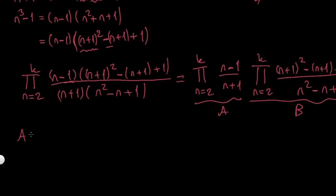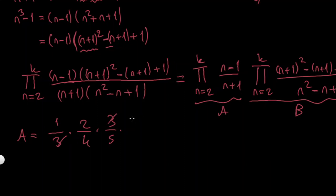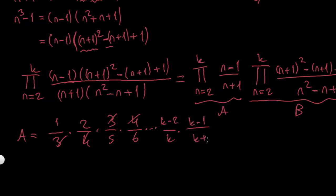For part A: putting n=2 gives 1/3, n=3 gives 2/4, n=4 gives 3/5, n=5 gives 4/6 — terms start cancelling. The last two terms at n=k−1 and n=k give k−2/k and k−1/k+1. After all cancellations, A = 2/(k(k+1)).